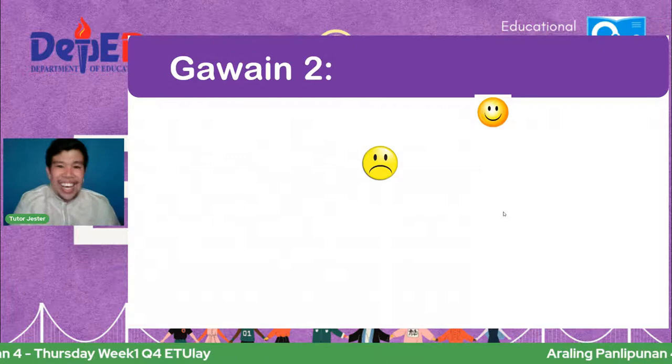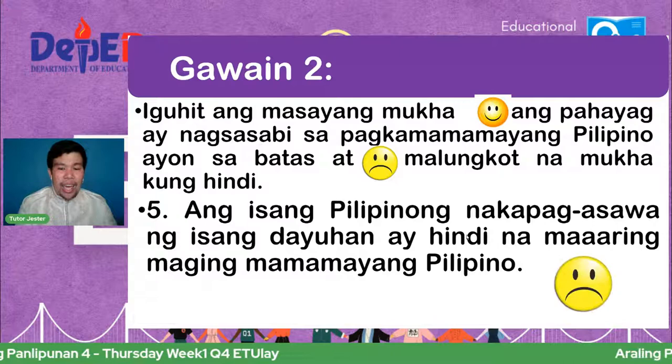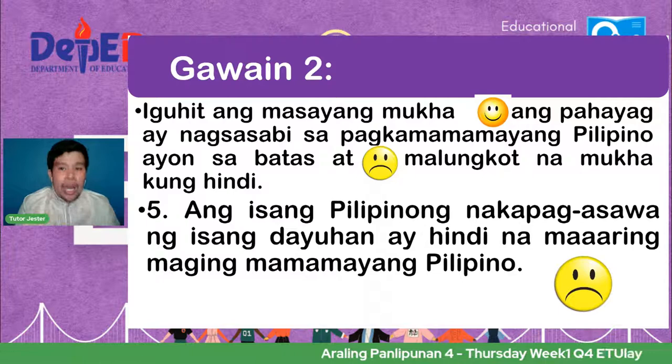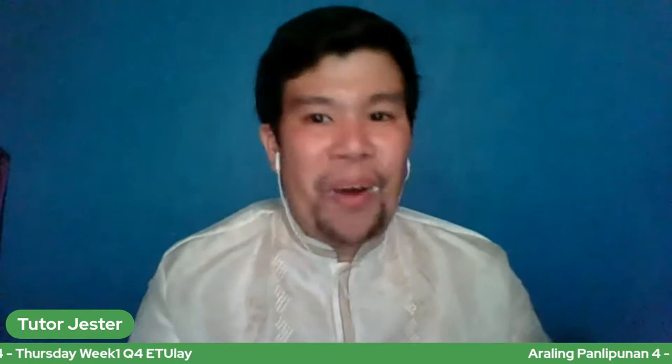Number five: ang isang Pilipinong nakapag-asawa ng isang dayuhan ay hindi na maaaring maging mamamayang Pilipino. Ang kasagutan ay sad face — hindi tama iyan dahil ayon sa ating batas, mananatiling Pilipino siya maliban na lamang kung pinili niyang sundin ang pagkamamamayan ng kanyang napangasawa. Maraming salamat, kayo ay amazing na grade 4 na mag-aaral. Paalam!